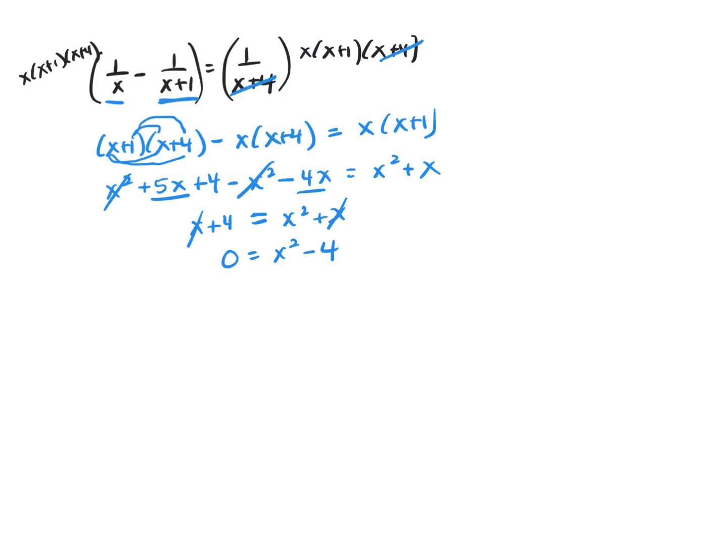You're left with 4 equals x squared. Move the 4 over because this is a quadratic equation. We know it's quadratic because the highest exponent is 2. You need to get 0 on one side. And then what you do is factor. This is the difference of two squares. x plus 2, x minus 2.